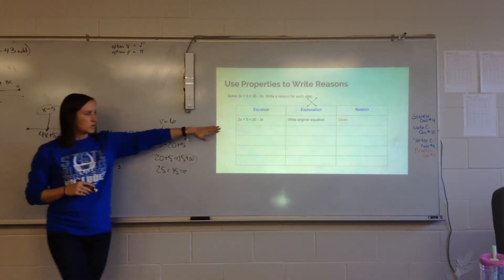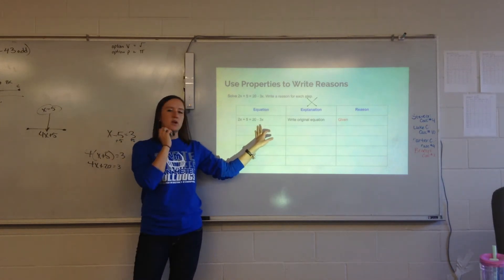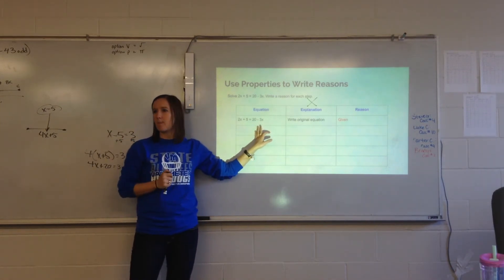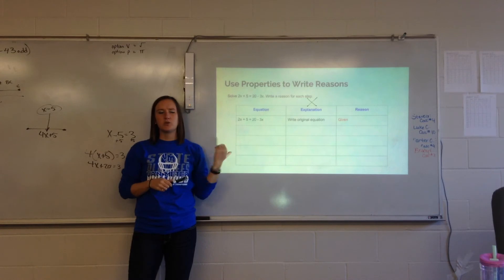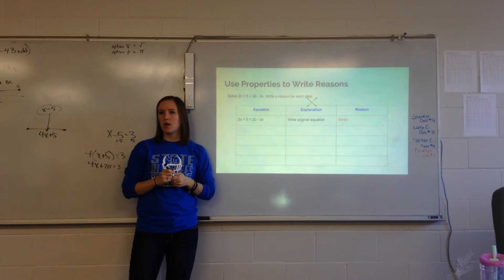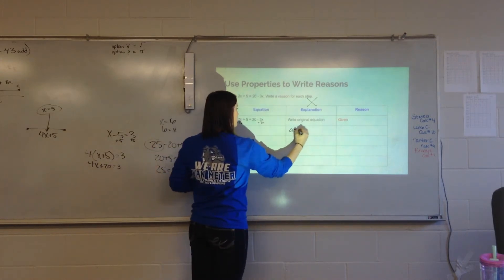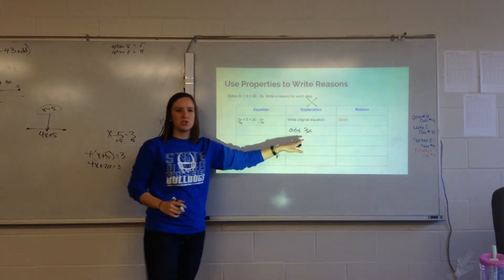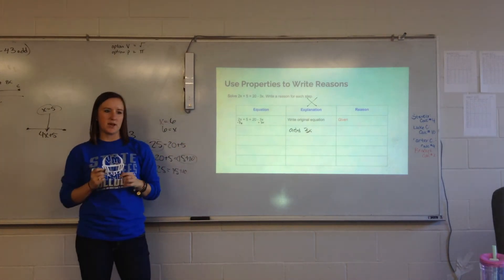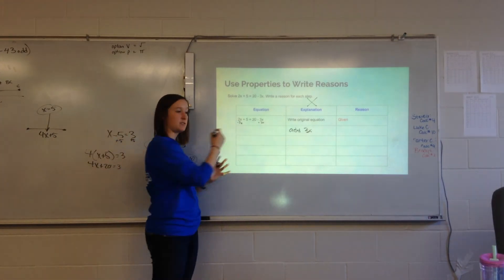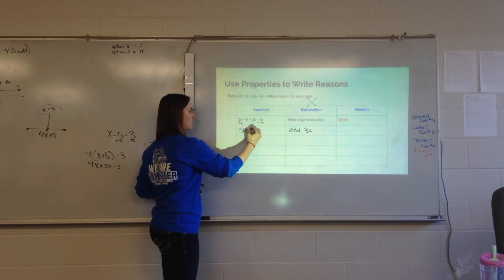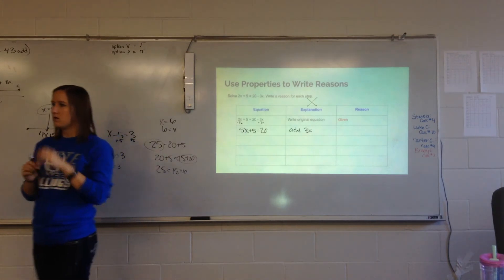So, we're starting with our equation 2x plus 5 equals 20 minus 3x. When we solve equations, what's the first step that we can do here? What are we going to do? Add the 3x to each side. Okay. Sam wants to add our 3x to each side. I'm adding 3x. You guys do not need this part, but I'm just showing you so we can see each step. What's 2x plus 3x? 5x.